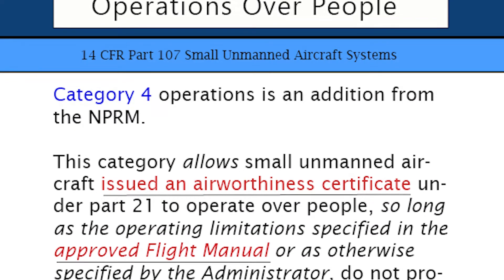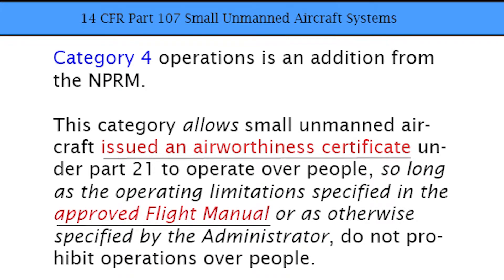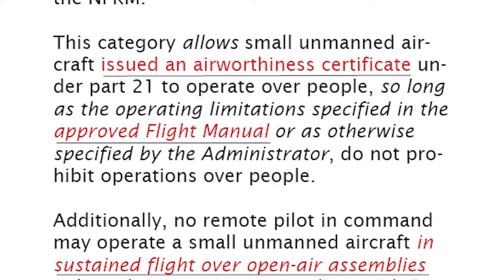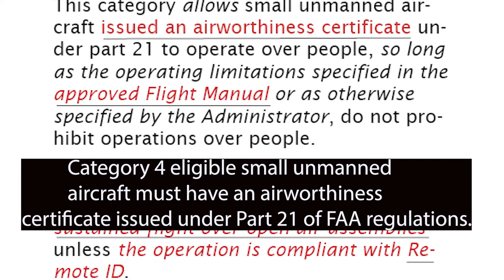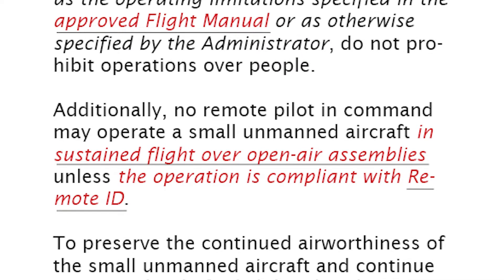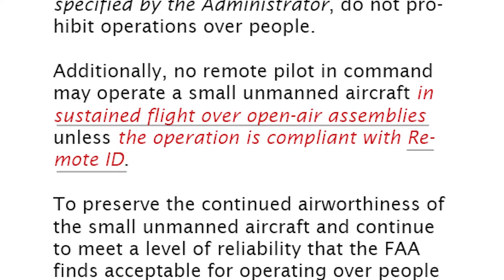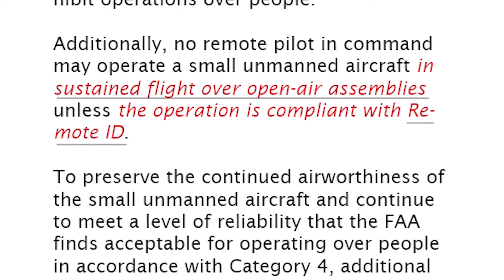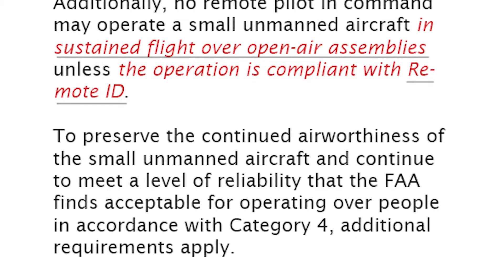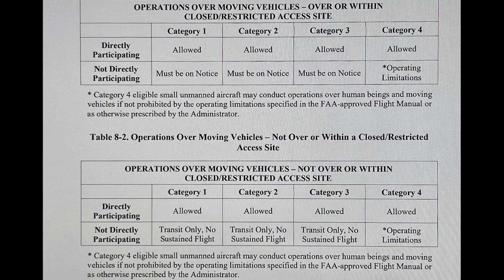Category 4 operations is an addition from the NPRM. This category allows small unmanned aircraft issued an airworthiness certificate under Part 21 to operate over people, so long as the operating limitations specified in the approved flight manual — remember that for the test — or as otherwise specified by the administrator do not prohibit operations over people. Additionally, no remote pilot in command may operate in sustained flight over open air assemblies unless the operation is compliant with Remote ID. To preserve continued airworthiness and meet a level of reliability the FAA finds acceptable for operating over people under Category 4, there are additional requirements.